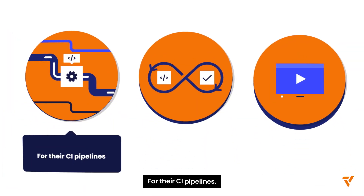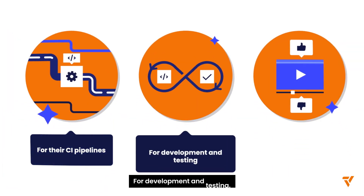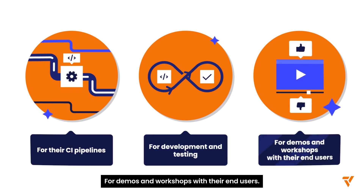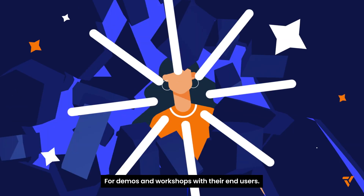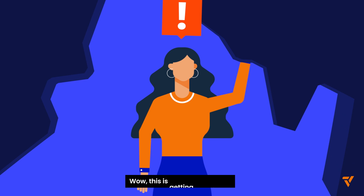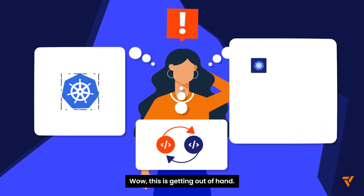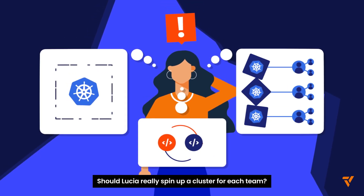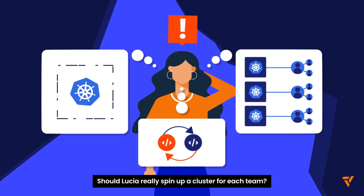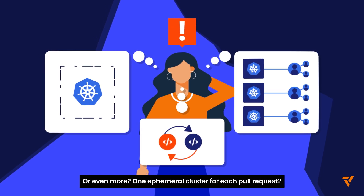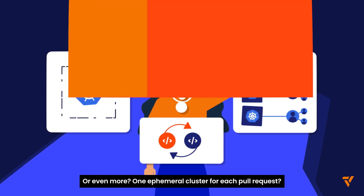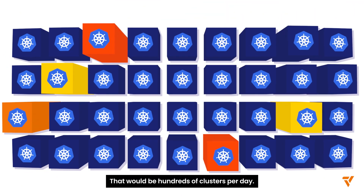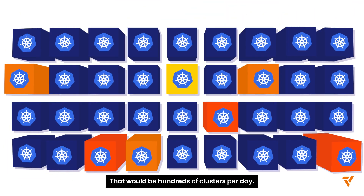For their CI pipelines, for development and testing, for demos and workshops with their end users. This is getting out of hand. Should Lucia really spin up a cluster for each team, or even more? One ephemeral cluster for each pull request? That would be hundreds of clusters per day.